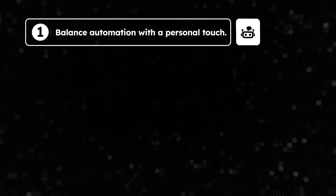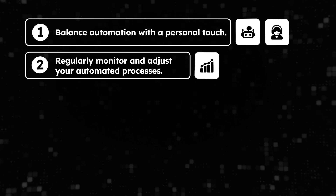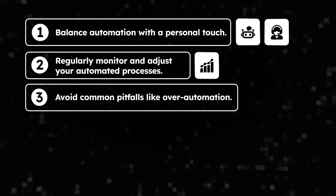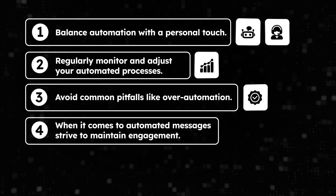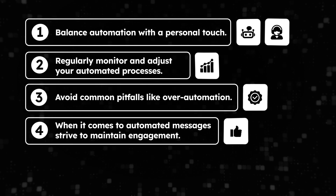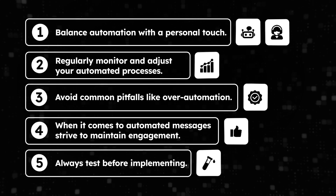And of course, for a more advanced solution, AI bots created with GPT Trainer can take your customer service automation to a whole other level. As we wrap up, let's talk about some best practices to keep in mind. Number one: balance automation with a personal touch — customers still value human interaction, so always make sure there's a way for people to reach a real person if needed. Regularly monitor and adjust your automated processes — what worked last month might not work next month, so keep your eye on your metrics and be ready to make changes. Avoid over-automation — don't bombard your audience with messages just because you can; quality always trumps quantity. Always strive to maintain engagement in your automated messages: use conversational language, ask questions, and encourage interaction. Finally, always test before you fully implement an automation — a small mistake can quickly become a big problem when it's automated.